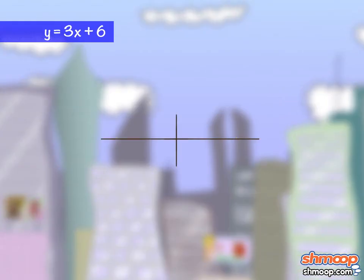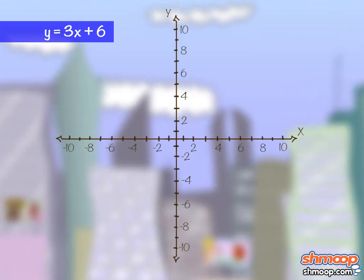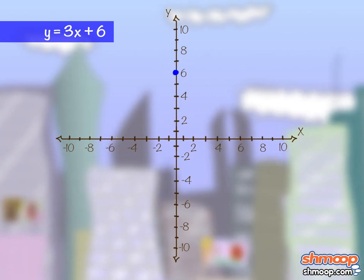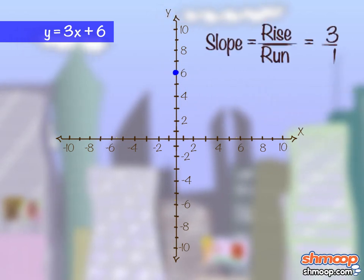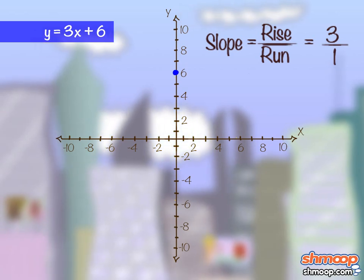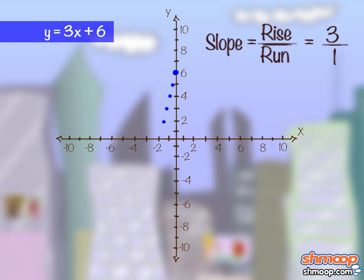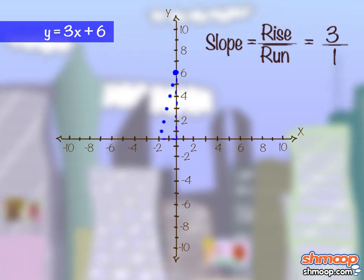Now we just have to graph them. We'll do the first equation in blue. The y-intercept is 6, so we can plot a point at 0,6, which is 6 up the y-axis. Because we know slope is rise over run, for every one we run or move to the right along the x-axis, we rise or move 3 up the y-axis. Reversing this, we move three spaces down the y-axis for every one we move left along the x-axis. The blue line will intersect the x-axis at negative 2, 0.